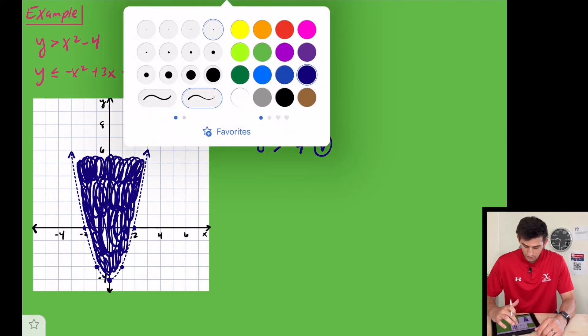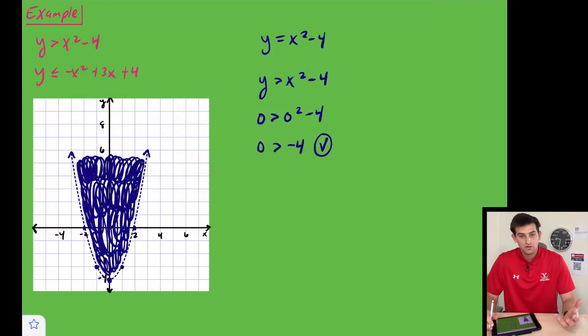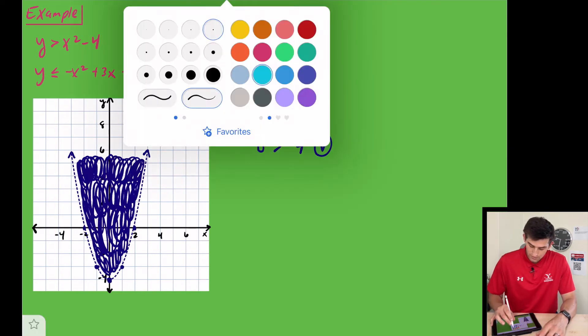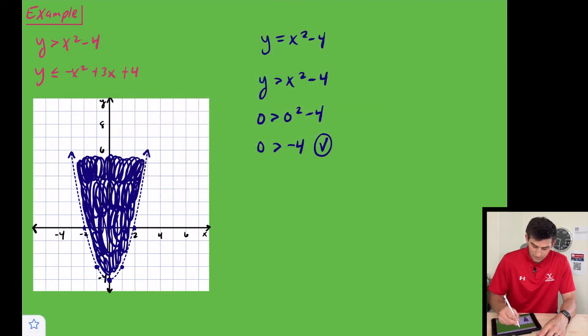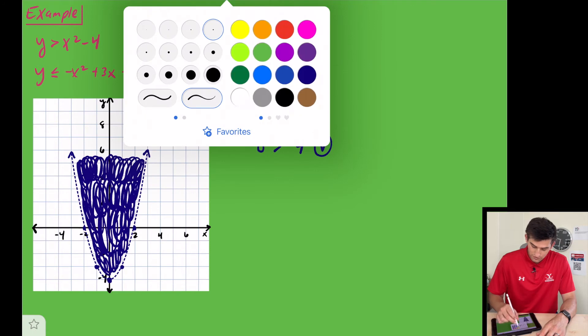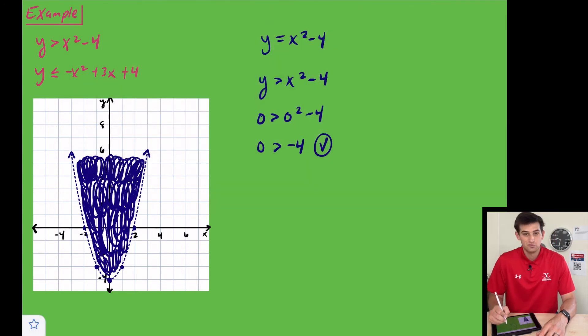Now let's switch up our color. Let's go with like a light blue. Now we're going to graph our second quadratic inequality. That's not showing up very well. Let's go with maybe like a purple. Still not showing up very well. Let's do this in yellow and then we can go back and change it to blue for the graph.